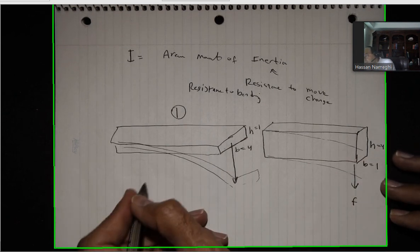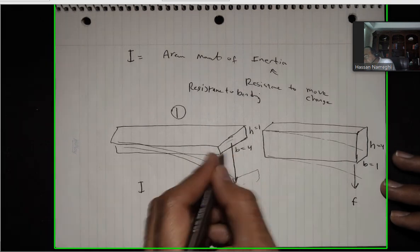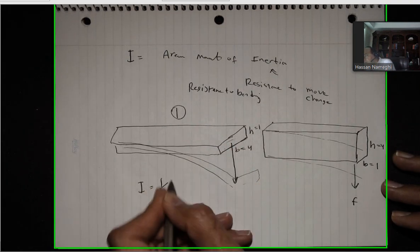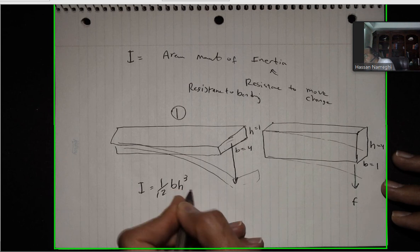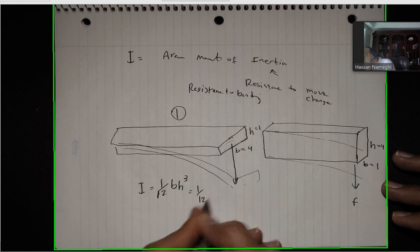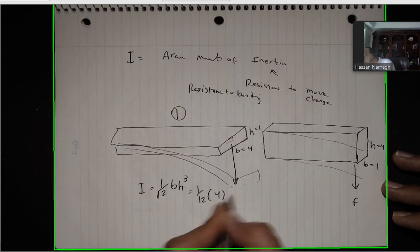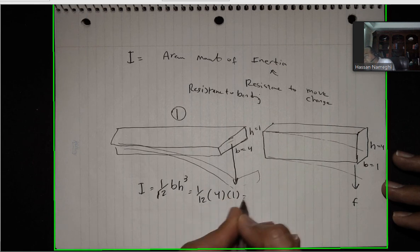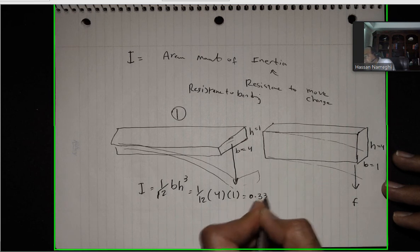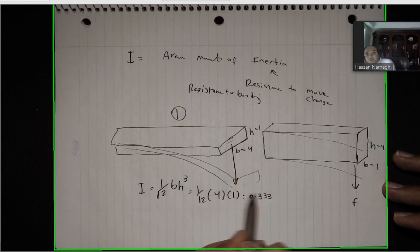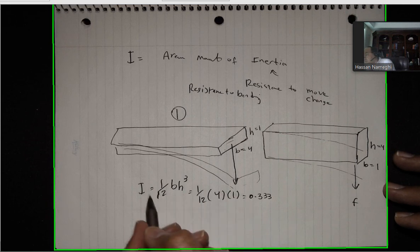The area moment of inertia for a rectangular shape is 1/12 bh cubed. So using 1/12, I have 4 times 1 cubed. The answer for this is 4 over 12, which is going to be 0.333. That's how much you get for moment of inertia in scenario 1.